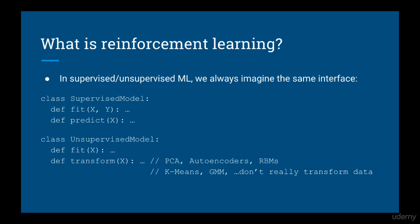With supervised and unsupervised learning, we always imagine the same interface, which we've modeled around scikit-learn. For a supervised machine learning interface, we usually have the functions fit, which takes in the input samples x and the targets y, and predict, which takes in the input samples x and tries to accurately predict y.